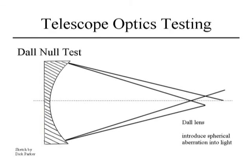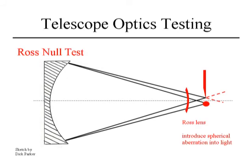Another way to get a null test is to introduce an auxiliary optic into the outgoing light beam to introduce spherical aberration into that beam, so that by the time it returns to your eye it produces a null return. This type of test — something similar to it — is what was used for the Hubble Space Telescope. One issue you must control is that the spacing between the light source and the mirror has to be very precisely controlled, or you'll introduce errors. It's a good test, more often used for much larger diameter mirrors — someone doing a 24-inch or 20-inch mirror might make a Ross lens.